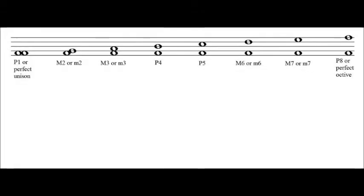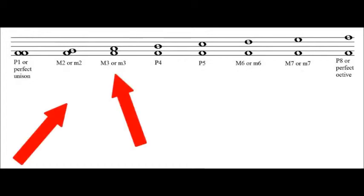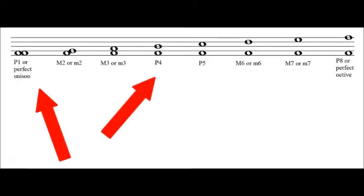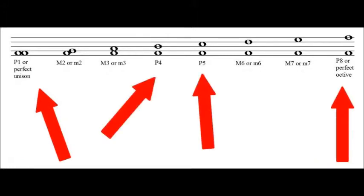First, we should probably review the last lesson. Remember the major, minor, and perfect intervals. Seconds, thirds, sixths, and sevenths are not perfect, while unisons, fourths, fifths, and octaves are. Non-perfect intervals can be either major or minor, whereas perfect intervals can only stay perfect.